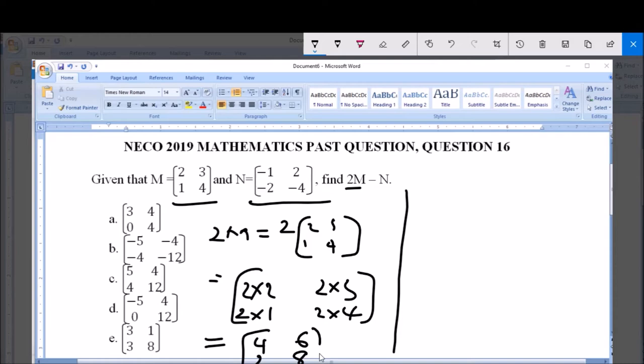So, we have now, this 2M is equal to a 2 by 2 matrix of 4, 2, 6, and 8.